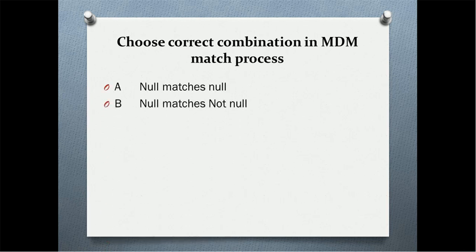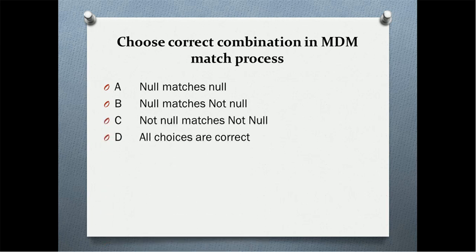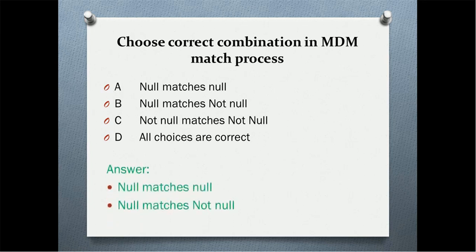Next question: choose the correct combination in the MDM match process. The combinations are: null matches none, null matches not none, not null matches not none, or all choices are correct. The correct answer is null matches null and null matches not-null. Not-null matching not-null is not a valid combination — it is considered default behavior.